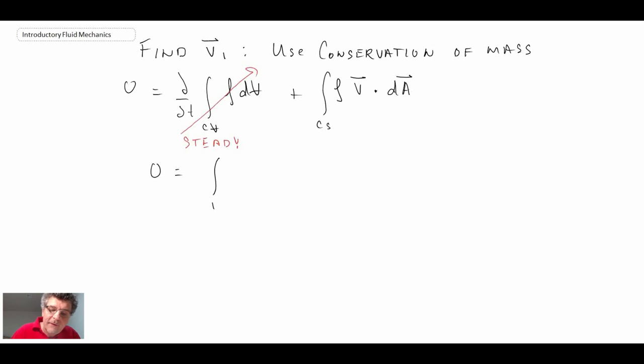So what we're left with is an integral over the two control surfaces where you have mass crossing the boundary, and that is surface 1 and surface 2.